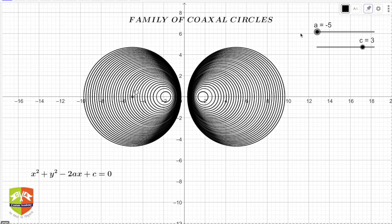In this case, the value of c is positive, and for different values of a you get these sets of circles, another set of coaxial circles.